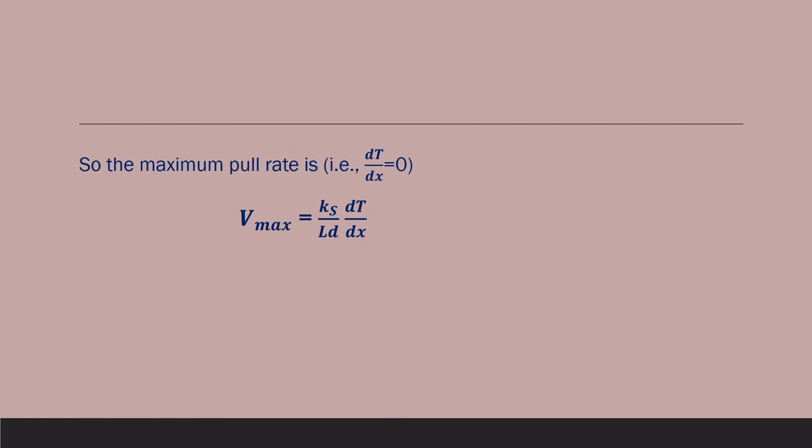Where Vmax is the maximum pull rate or pull speed and D is the density of solid silicon. In this way, we can easily get the maximum pull rate of the pull rod. That is Vmax equal to Ks divided by Ld dT/dx.